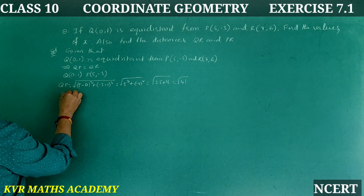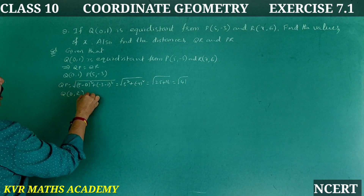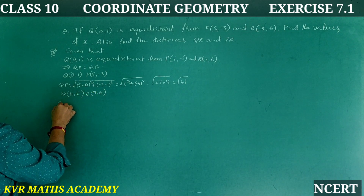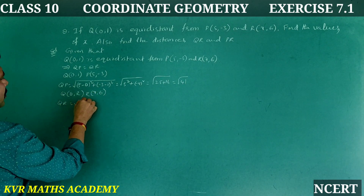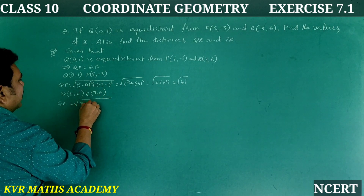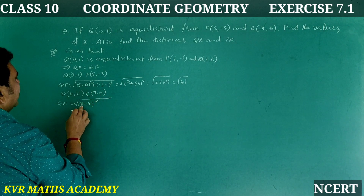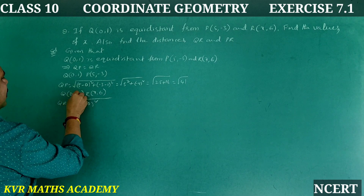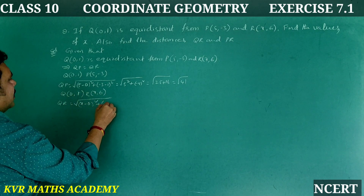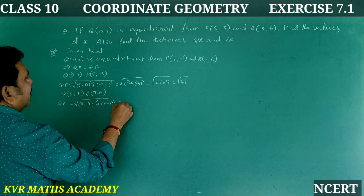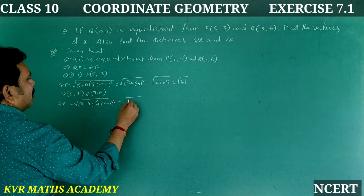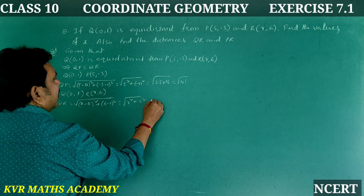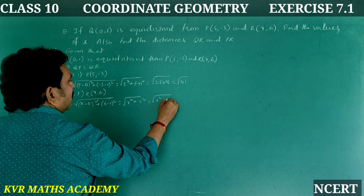Now QR: Q is (0,1) and R is (x,6). So QR = √[(x−0)² + (6−1)²] = √[x² + 5²] = √(x² + 25).